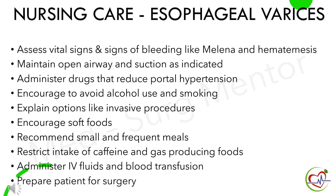Nursing cares are: assess vital signs and signs of bleeding like melena and hematemesis, maintain open airway and suction as indicated, administer drugs that reduce portal hypertension, encourage to avoid alcohol use and smoking, explain options like invasive procedures, encourage soft diet, recommend small and frequent meals, restrict intake of caffeine and gas-producing foods, administer IV fluids and blood transfusions, and prepare patient for surgery.